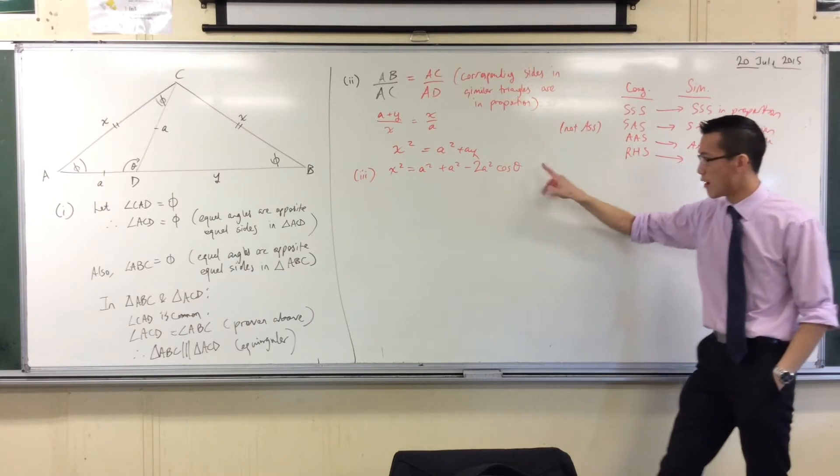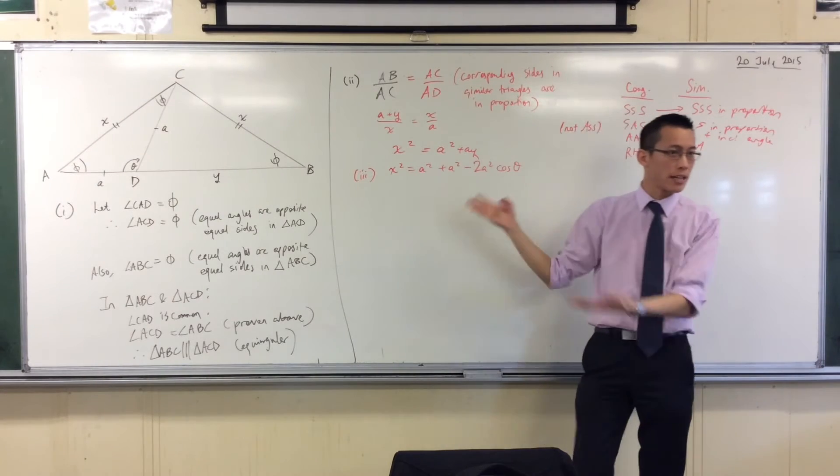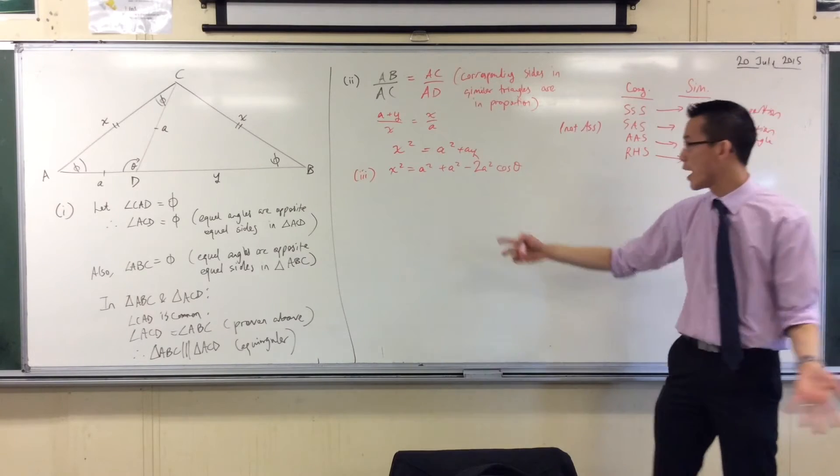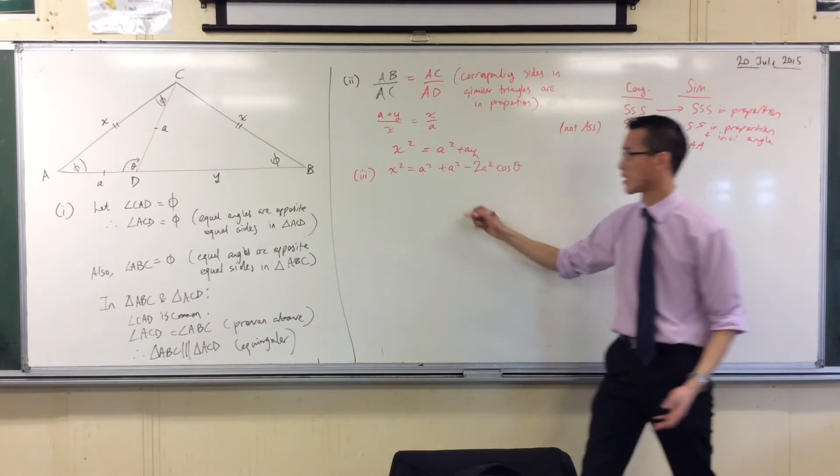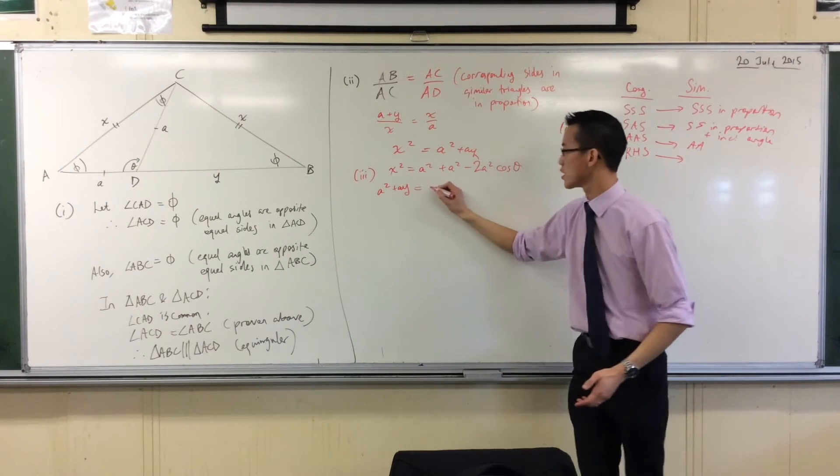Look at what you're trying to prove and look at this. What's the culprit here that's standing out and shouldn't be there? Yeah, the X squared, which you just proved was this in terms of A's and Y's, okay? So that's why this just slots in from the previous part.